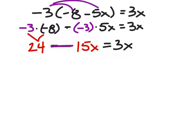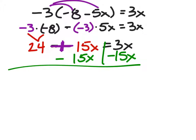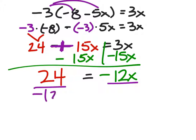We have minus and negative, so that becomes a plus sign. I want all x's on one side, so I'll subtract 15x from both sides. That gives 24 equals negative 12x. Finally, dividing both sides by negative 12, we get x equals negative 2.